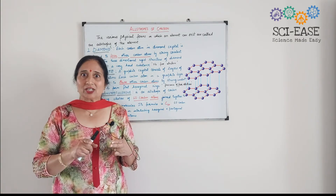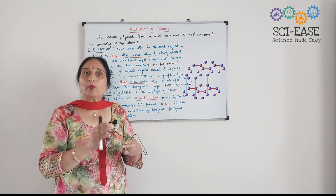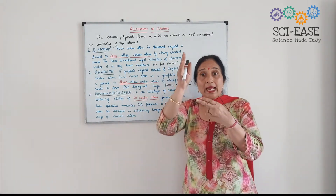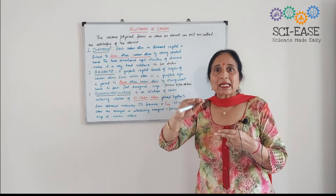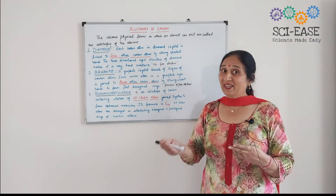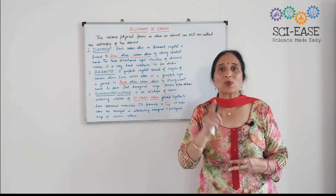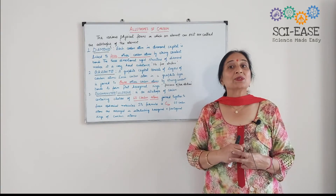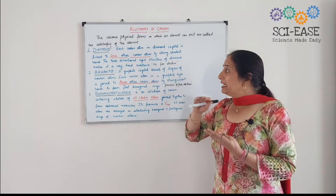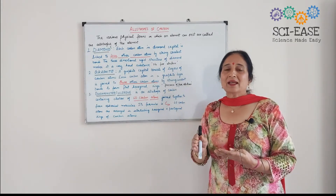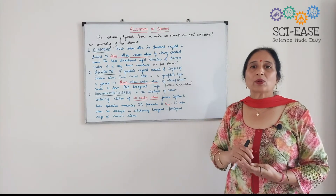Due to its structure, the layers in graphite are far apart — covalent bonds can't be formed between them; they are held together by weak Van der Waals forces. Due to this, these layers can slide over one another, and that is why it is slippery to touch and can be used as a lubricant. This question can be asked: why is graphite used as a lubricant? It is very soft and slippery due to its layer-type structure, and these layers are held together by weak Van der Waals forces, allowing the layers to slide over one another.